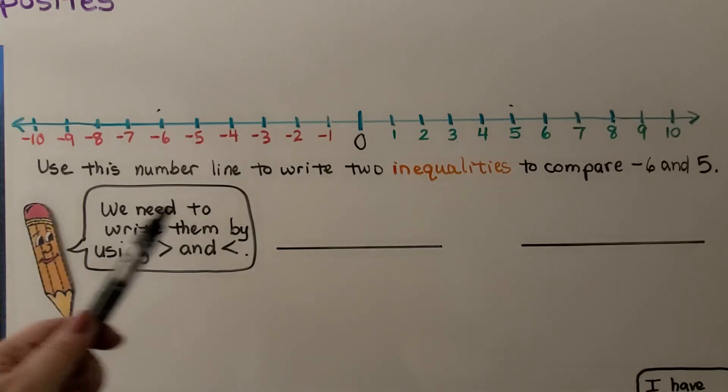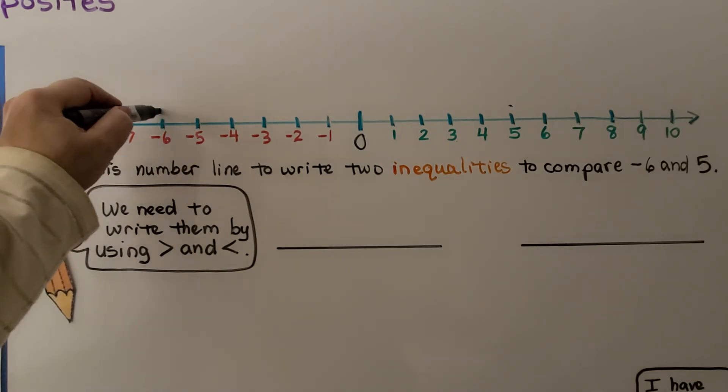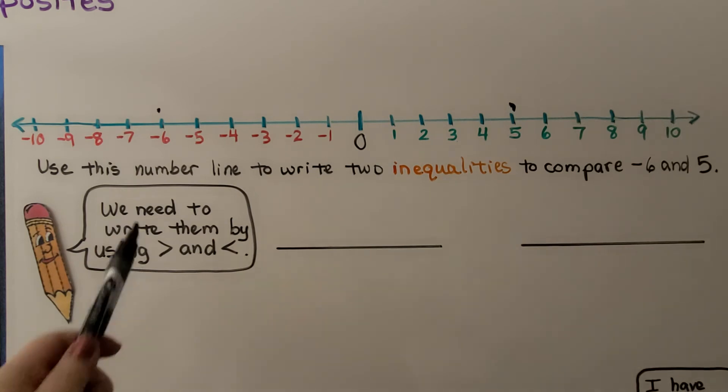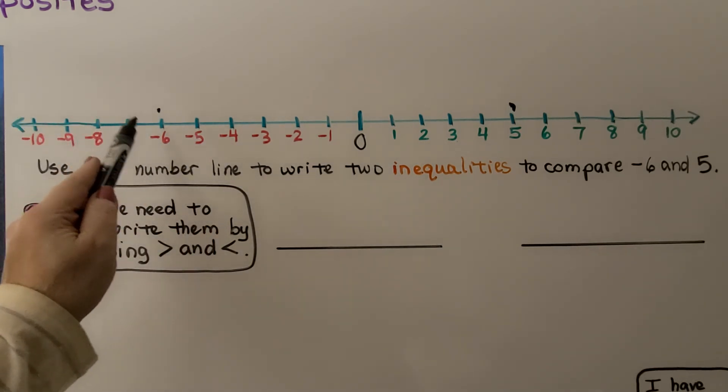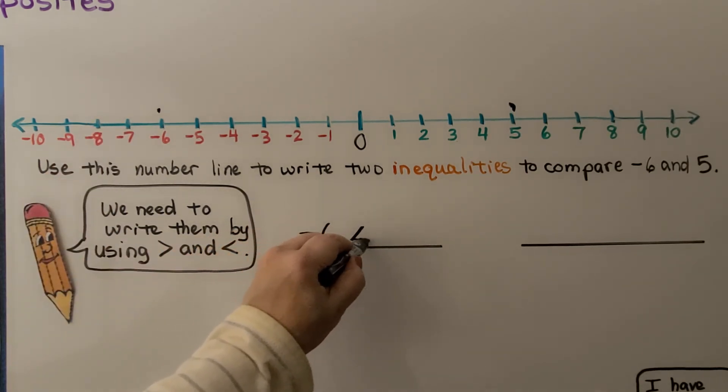Here we have another number line. It goes from positive 10 to negative 10. And it's telling us to use this number line to write two inequalities to compare negative 6 and 5. So that's a positive 5. There's no sign in front of it. It's a positive 5. This is negative 6 right here. This is 5 right here. We know the lesser number is farther to the left. So negative 6 is less than 5.